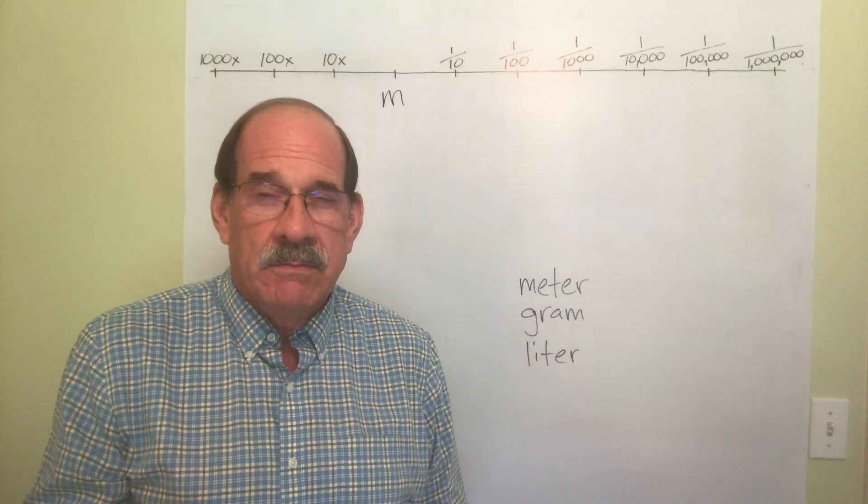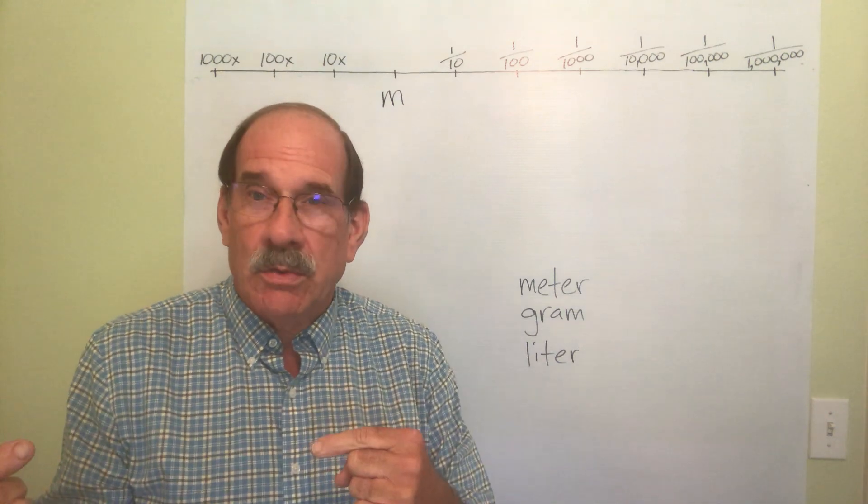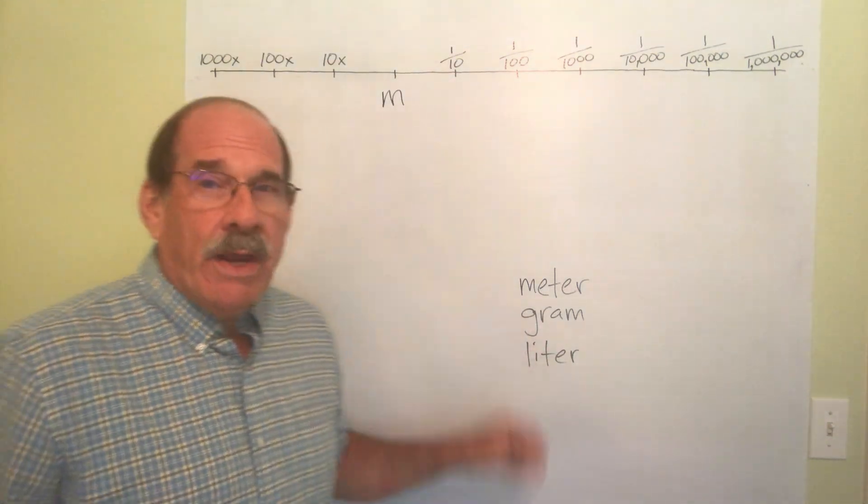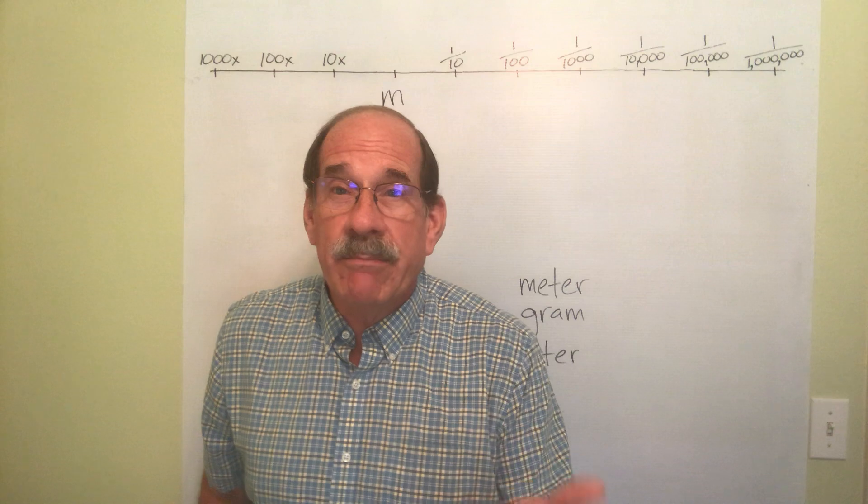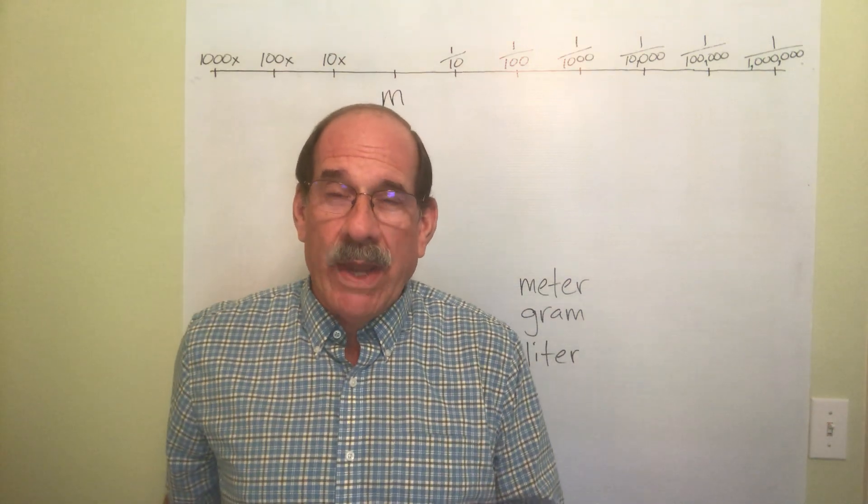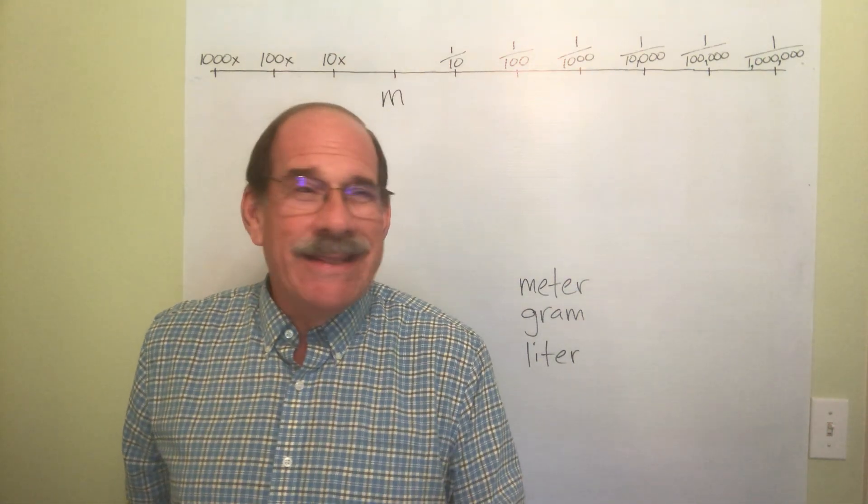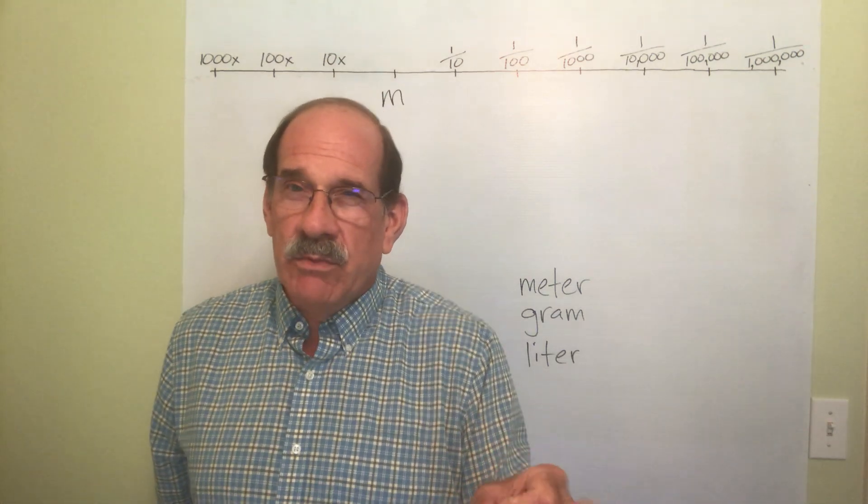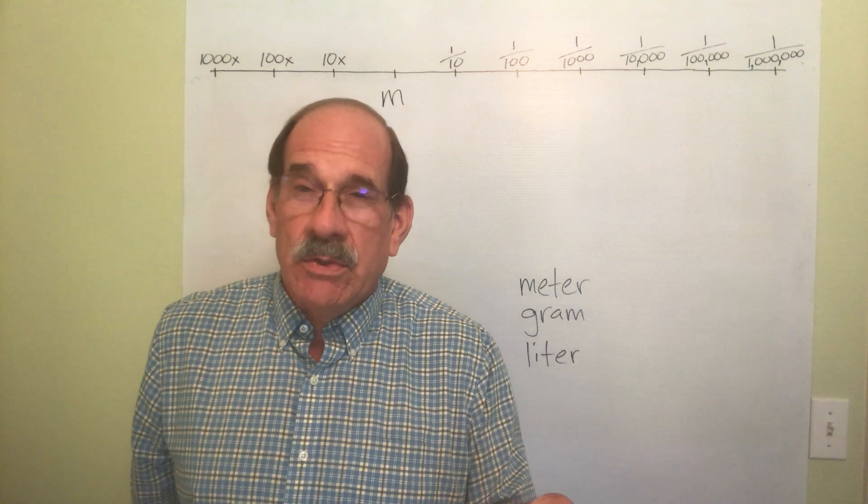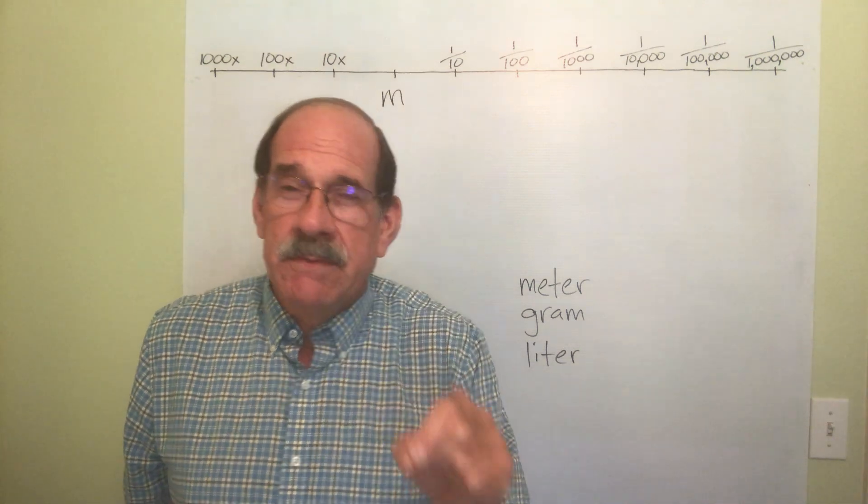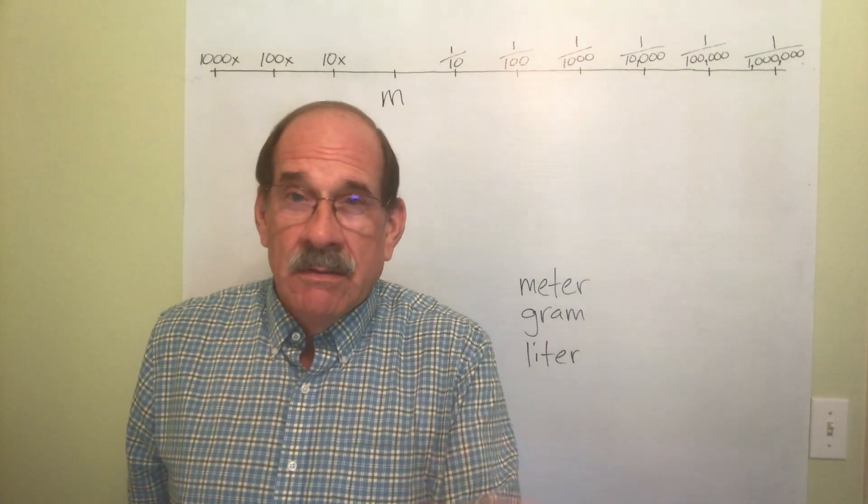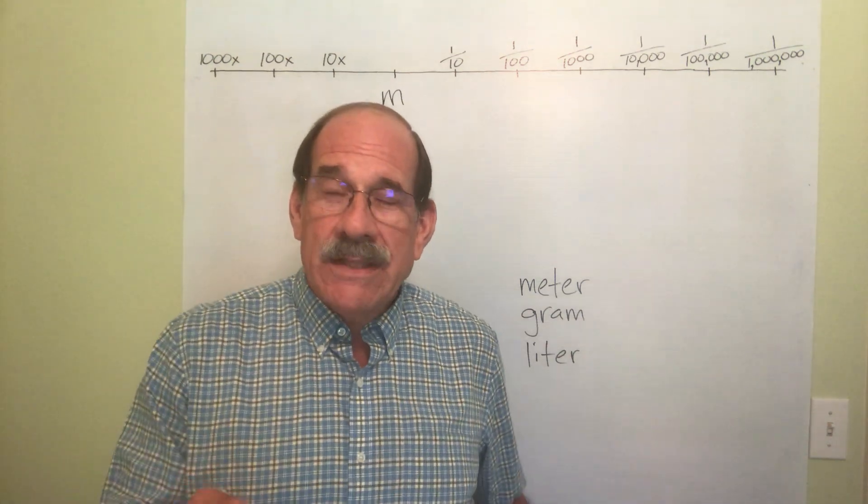We also have grams. Gram is a weight measurement - that's the basic weight measurement in the metric system. This doesn't help maybe, but you get a nickel - a nickel weighs roughly five grams. So cut a nickel into five little pieces and one-fifth of a nickel, that's about a gram. It's a small weight, but that's the main weight measurement in the metric system, and the symbol is a g.